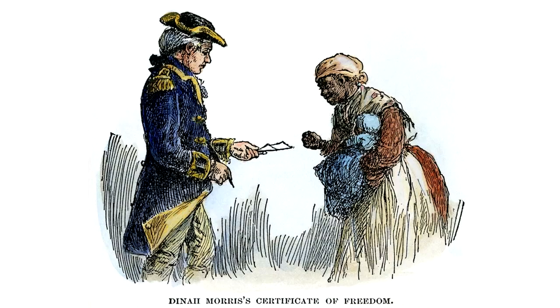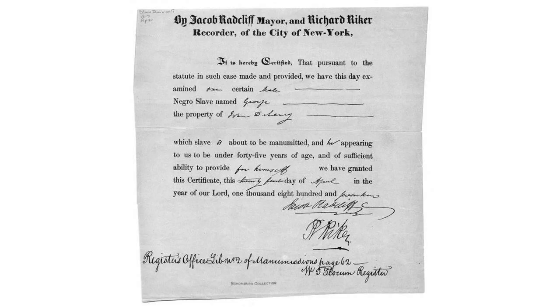For example, slave regimes' nature was different in relation to economic regions, patterns of manumission, the nature of abolition, and their importance in demographic terms. Manumission was the possibility that enslaved individuals had to gain their freedom, like for example paying their masters. Abolition was the ending of the institution of slavery.